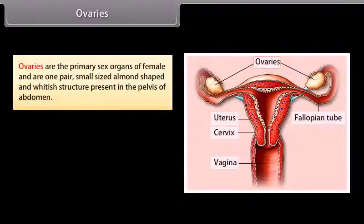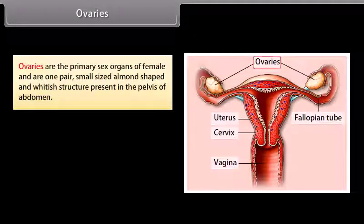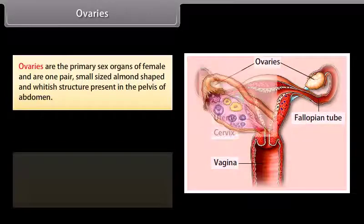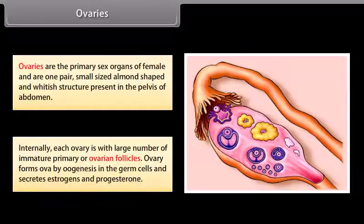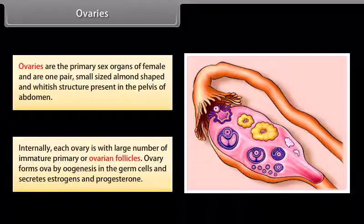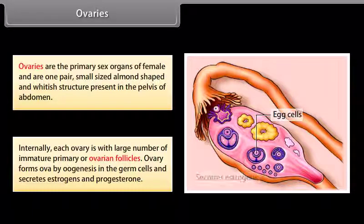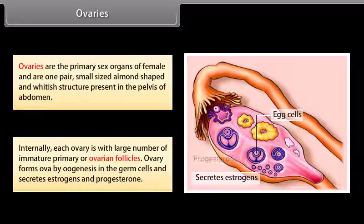Ovaries are the primary sex organs of the female. They are one pair of small-sized, almond-shaped whitish structures present in the pelvis of the abdomen. Internally, each ovary contains a large number of immature primary ovarian follicles. The ovary forms ova by oogenesis and secretes estrogens and progesterone.